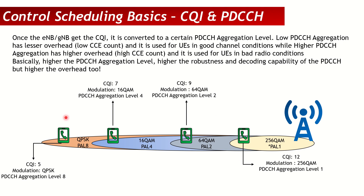For a UE at the cell edge in very bad radio conditions sending CQI 5, the gNodeB might choose a low modulation like QPSK for the data and a very robust PDCCH aggregation level such as 8 or 16. A bad user will use a very high PDCCH aggregation level and a low modulation scheme.